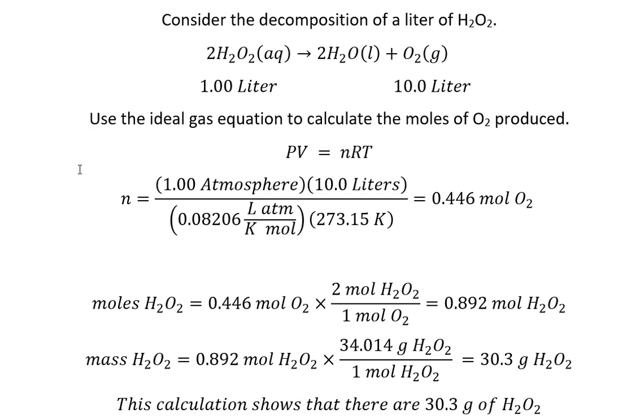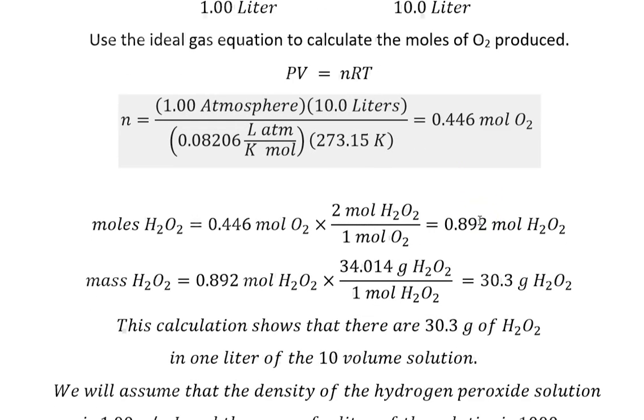PV equals nRT, N equals PV over RT. You can see the substitution here, and we get 0.446 moles of oxygen produced.